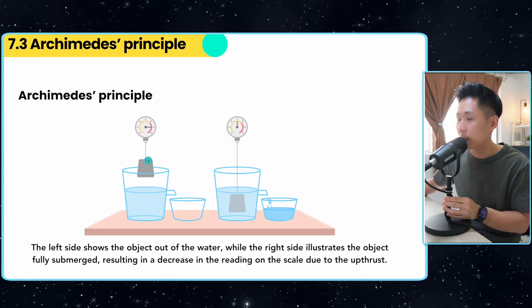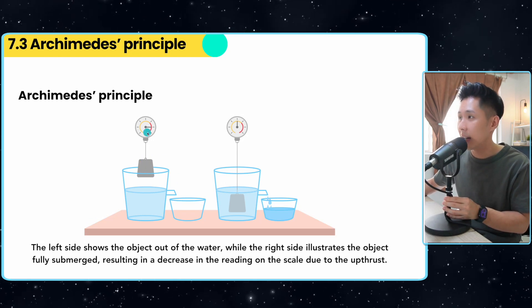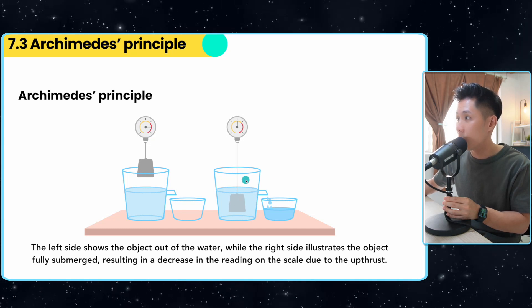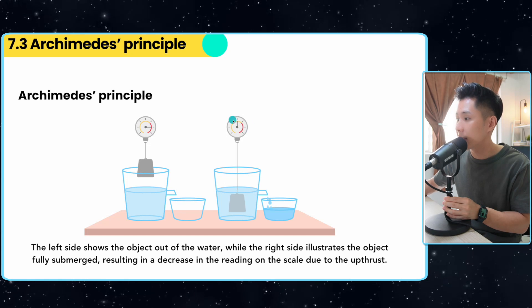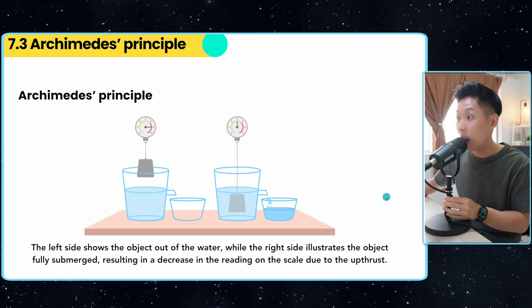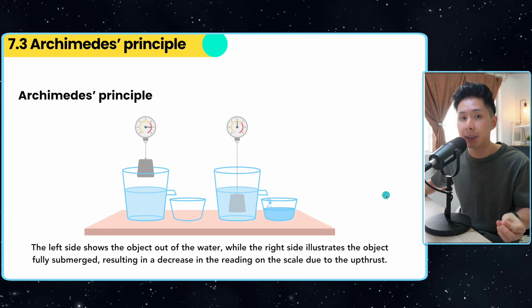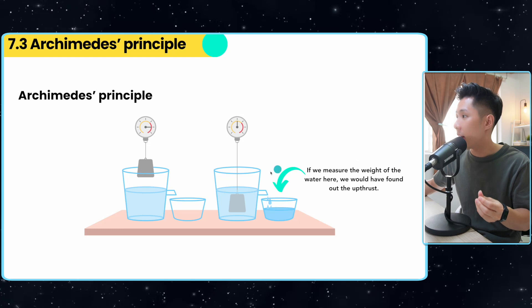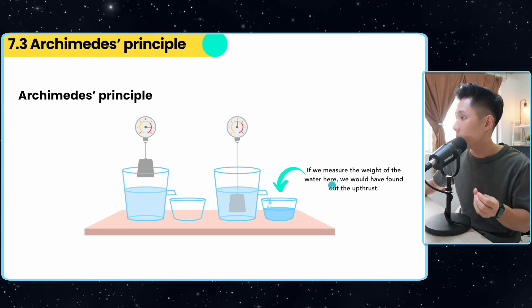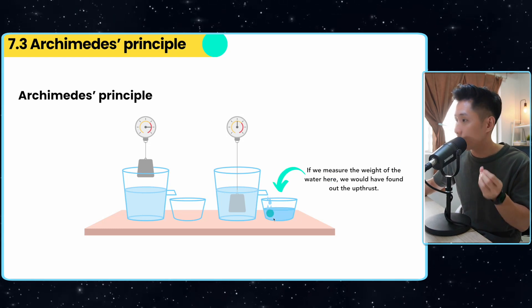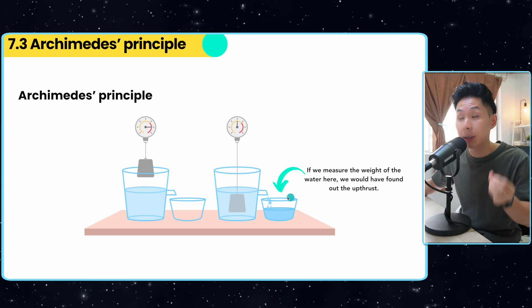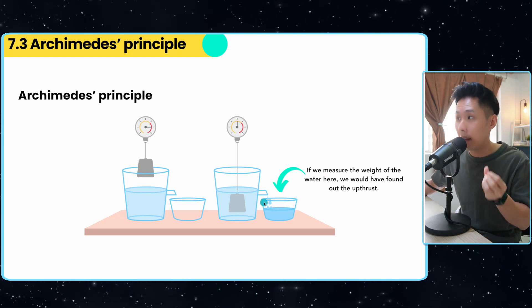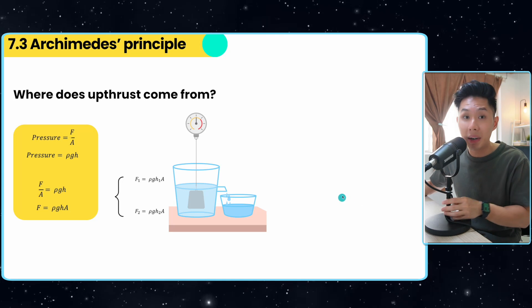Before this object was released into the water, you'll see that the reading of the scale balance. But after I submerged the block into the water, you'll see that the scale balance decreases in the reading. And why is that? That is because of upthrust. A force is pushing the object upwards. As a result, the reading decreases. Archimedes' principle states that the amount of water displaced here, if you were to measure their weight, you would have figured out the magnitude of upthrust in this scenario.